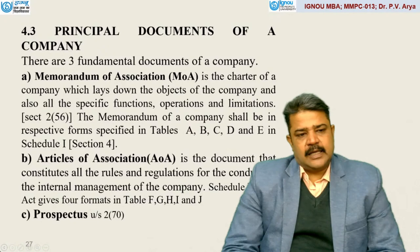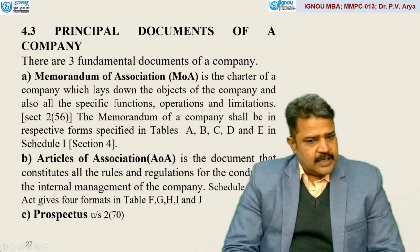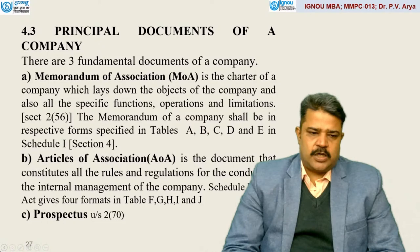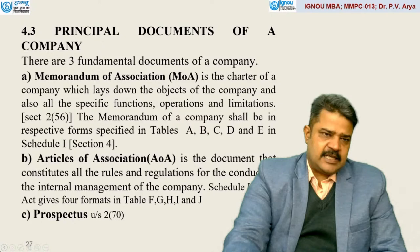Article of Association is a document that constitutes all the rules and regulations for the conduct of internal management of the company. Schedule 1 of the Act gives four formats in the form of Tables F, G, H, I, and J.